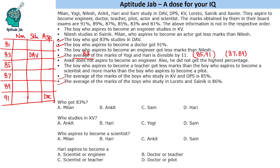The average of the marks of the boys who study in KV and DPS is 85%. One value should be lower than 85 and another higher. Since 83 is already covered by DAV, one of them is 81 and the other is 89 — so KV and DPS correspond to 81 and 89. The average of marks of boys in Loreto and Sanic is 86%, so those are 85 and 87. The remaining school, Xavier, corresponds to 83.